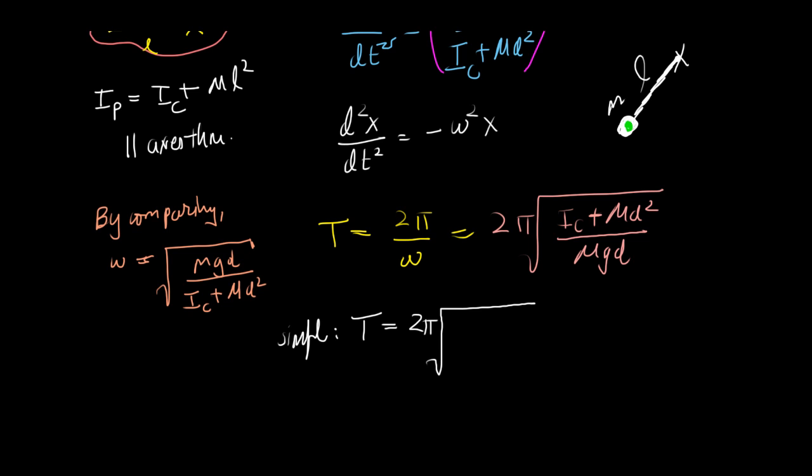So zero plus md squared, and m times d is the distance between the pivot point and the center of mass, which in this case is l. So that is ml squared divided by mgd, mg and d is l.